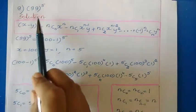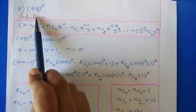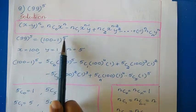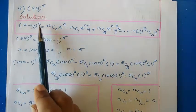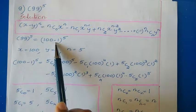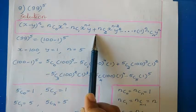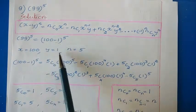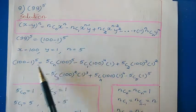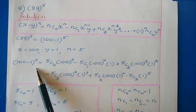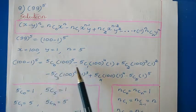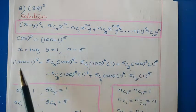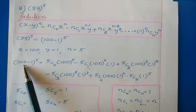Question number 9: 99 to the power 5. We write 99 as 100 minus 1 to the power 5. This is in the form x minus y to the power n with a negative sign, so we use the binomial theorem for negative values. Comparing, x is 100, y is 1, and n is 5.